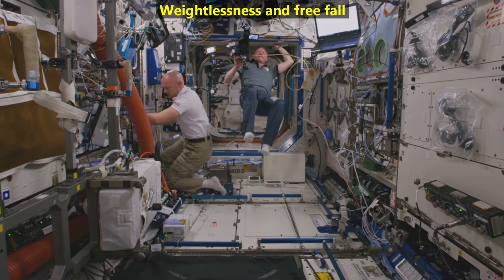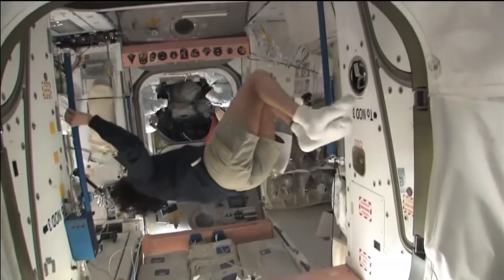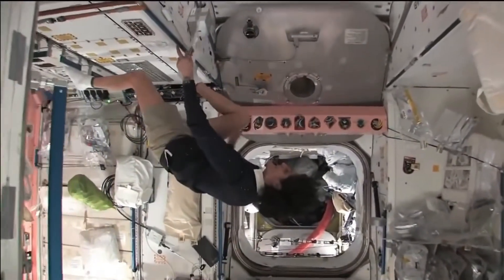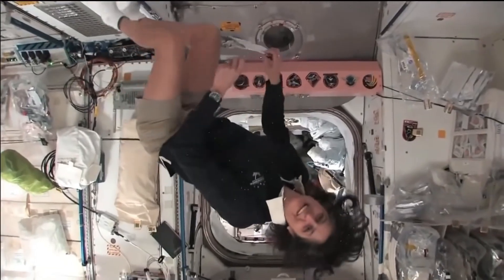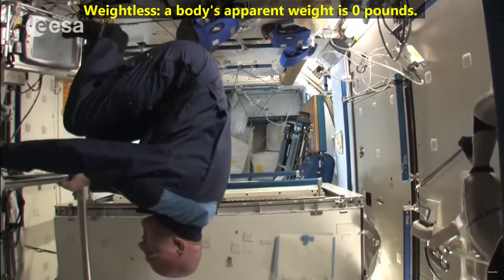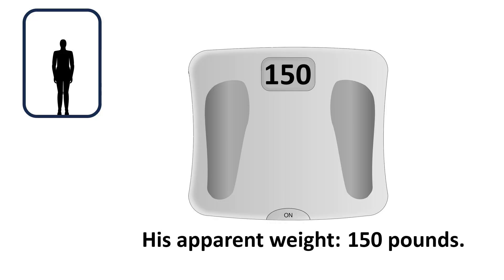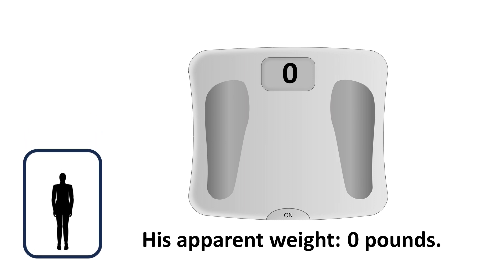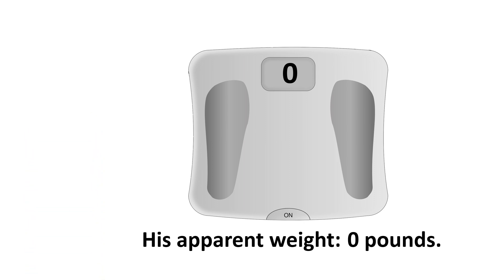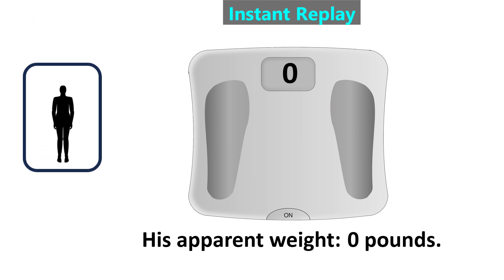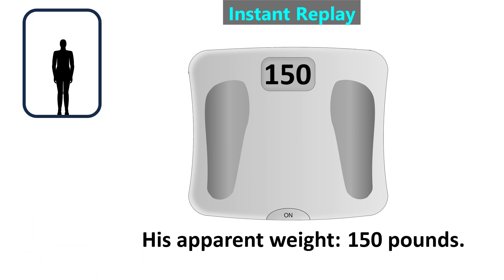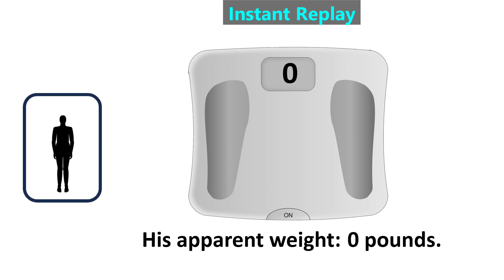Our final topic will be weightlessness and free fall. Every astronaut, everything inside the International Space Station, and the space station itself has an apparent weight of zero pounds. When a body has an apparent weight of zero pounds, we say it is weightless. To understand how this happens, let's return to an elevator example. When this elevator is still, the floor is supporting this man's full weight, so a scale would show his apparent weight is 150 pounds. But if the elevator's cable went completely slack, then the elevator and the man would both fall down the elevator shaft very fast. They would fall so fast that he would seem to float inside the elevator. The elevator floor and scale are not supporting him, so his apparent weight is zero pounds — that means he's weightless.